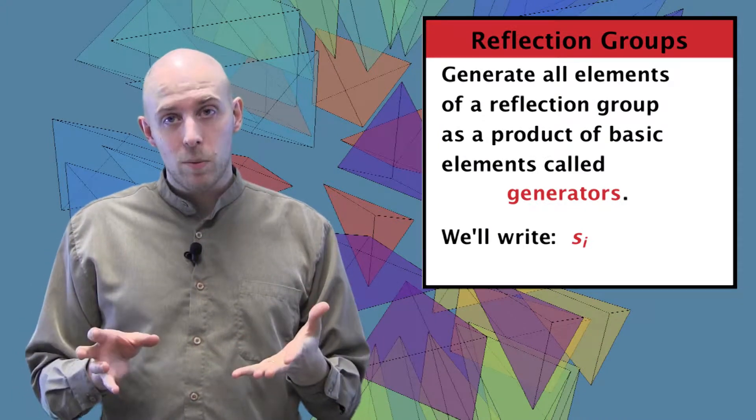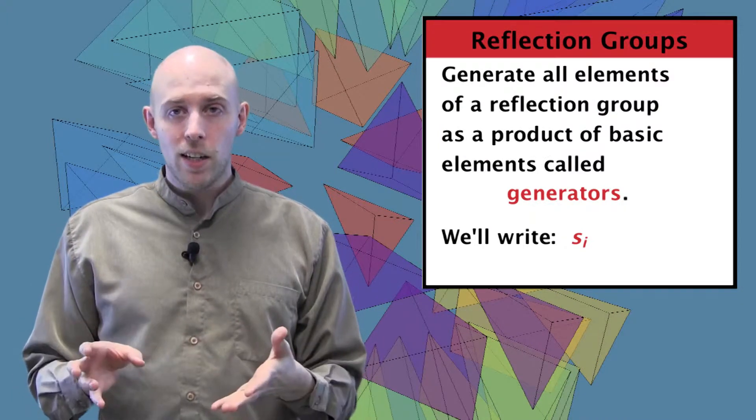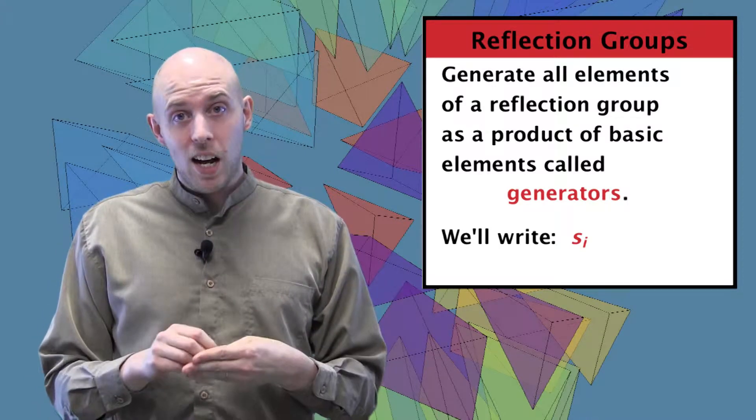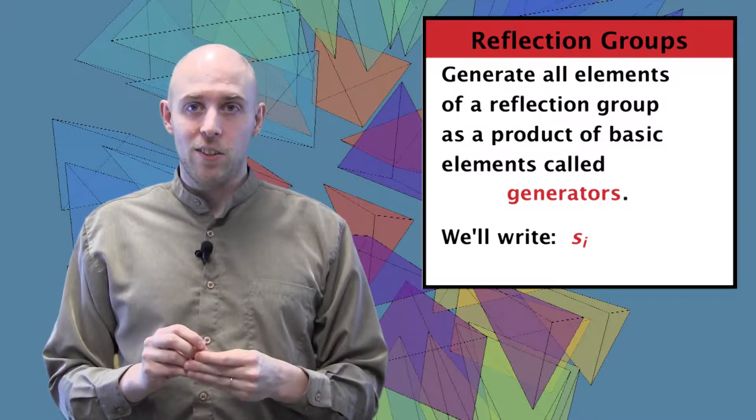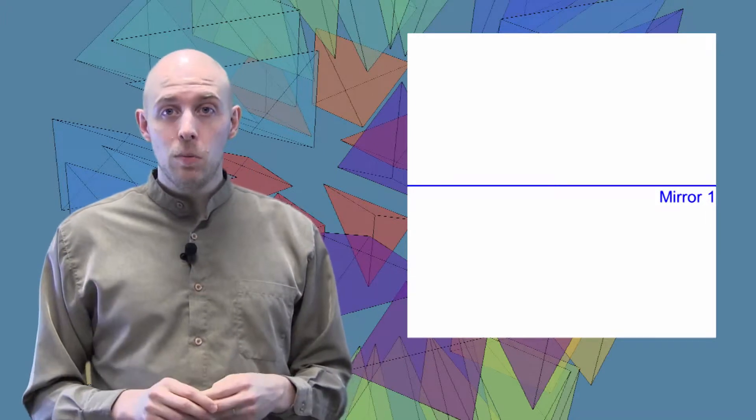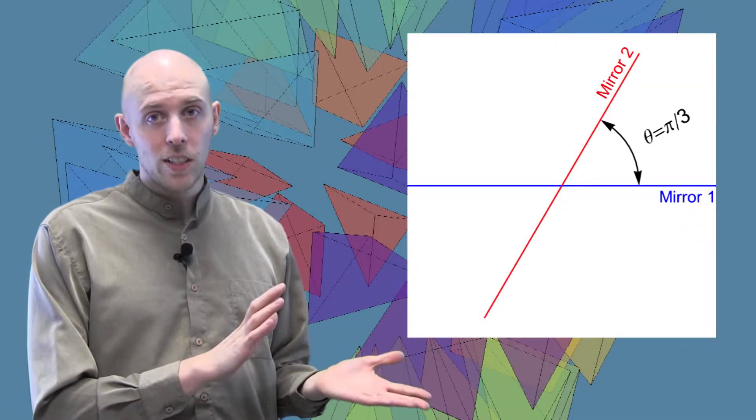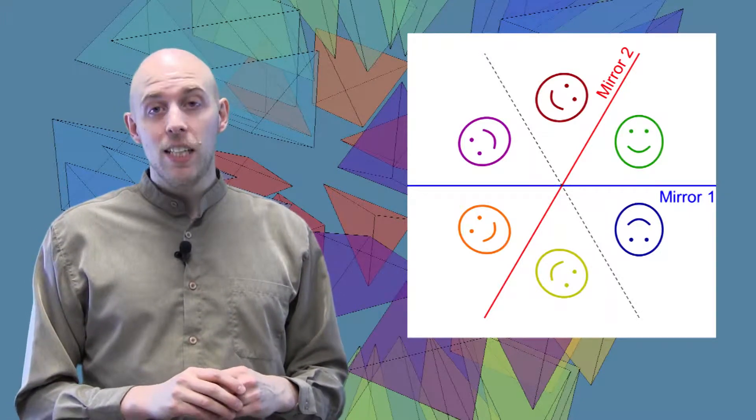We're going to generate all elements in a reflection group as a product of some basic reflections called generators. We'll write S sub i for the i-th generator. For example, in two dimensions, if we place two one-dimensional mirrors at an angle of 60 degrees to each other, then our group consists of six elements.